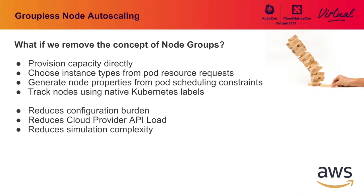We started to explore the idea of what would happen if you removed the group and provisioned capacity directly. When pending pods come in, you compute the resource requirements of all those pods — just like cluster auto-scaler might — but instead of simulating from an existing static set of node templates, you just ask EC2 for exactly the instance you want. We can pick an M5 large or any instance that makes sense. Node properties like availability zone and operating system can all be computed dynamically, shifting from a static template world to a dynamically generated template world, which significantly reduces configuration complexity.